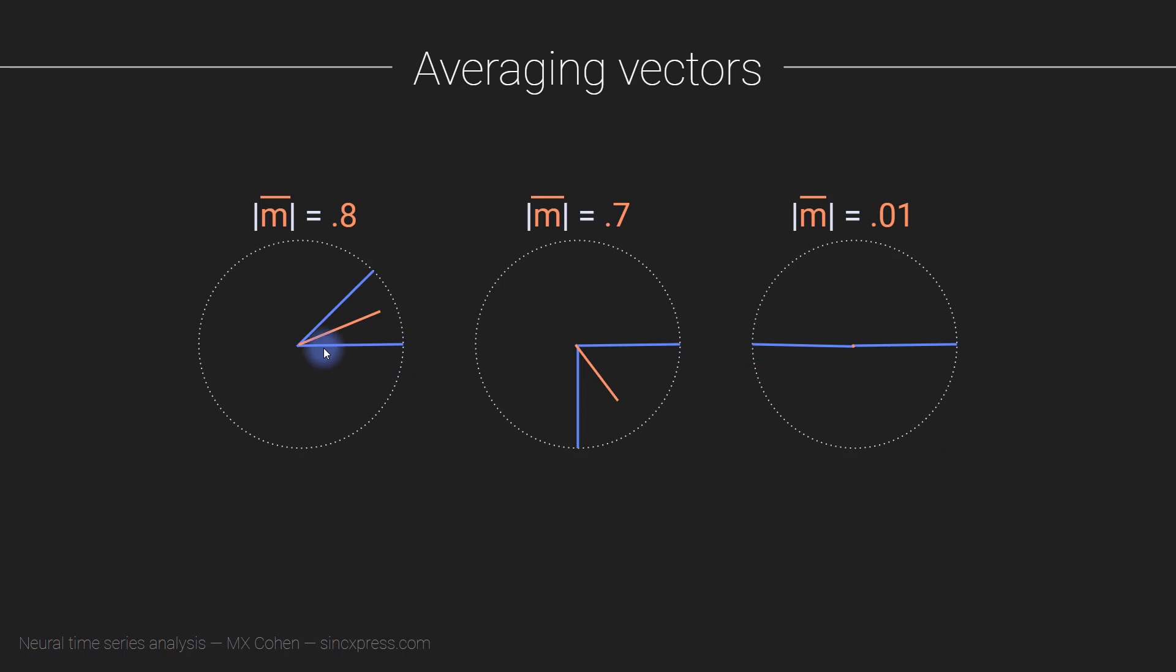What we are interested in is when we have these unit vectors, where the lengths are all one and the angles are defined by the phase angle time series that we get from complex Morlet wavelet convolution, or filter-Hilbert, or short-time Fourier transform. We compute the average of these vectors, and then we consider the length of the average.